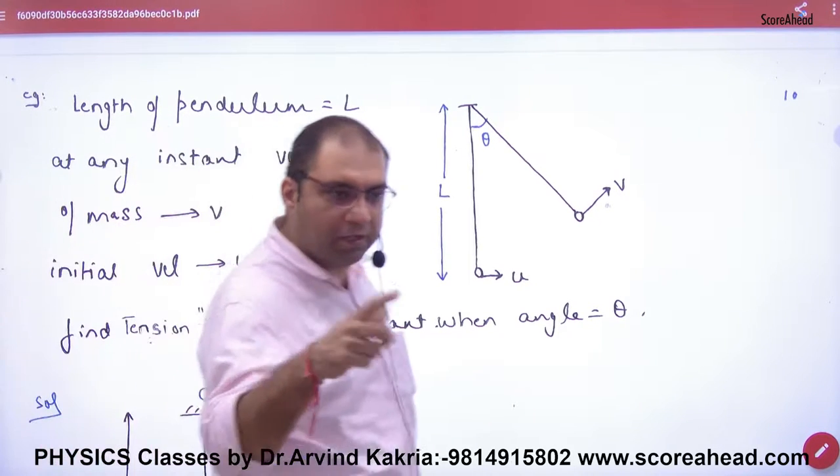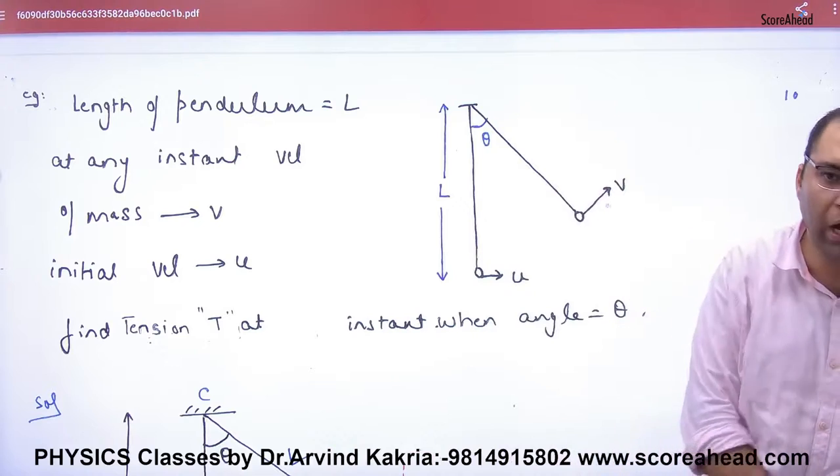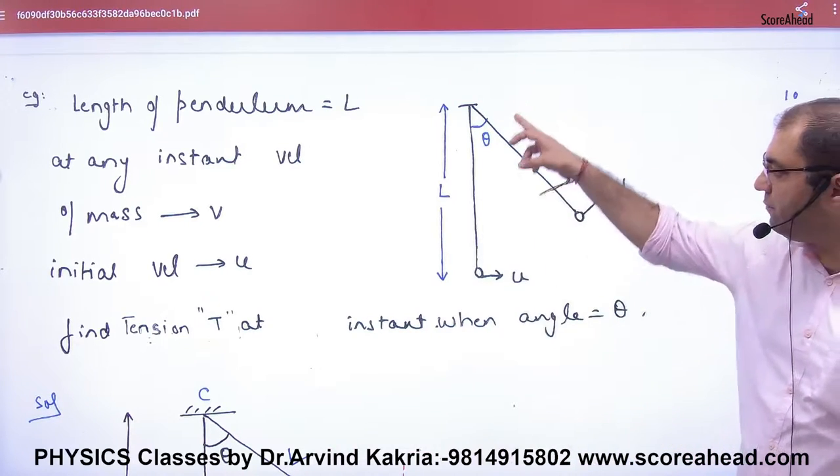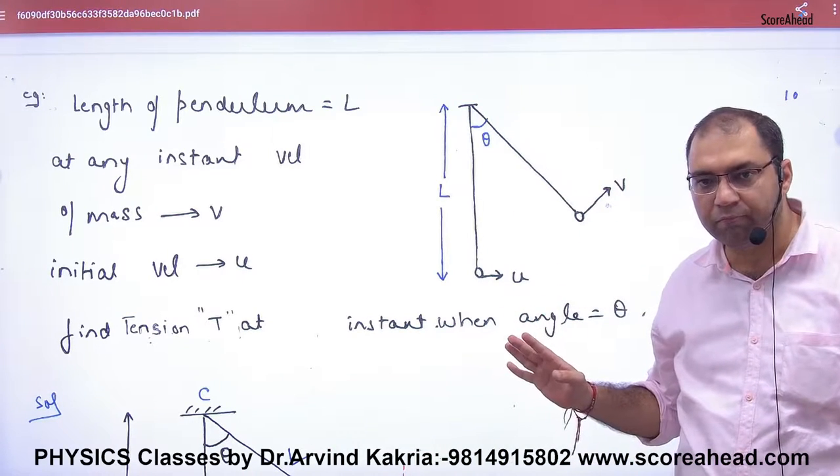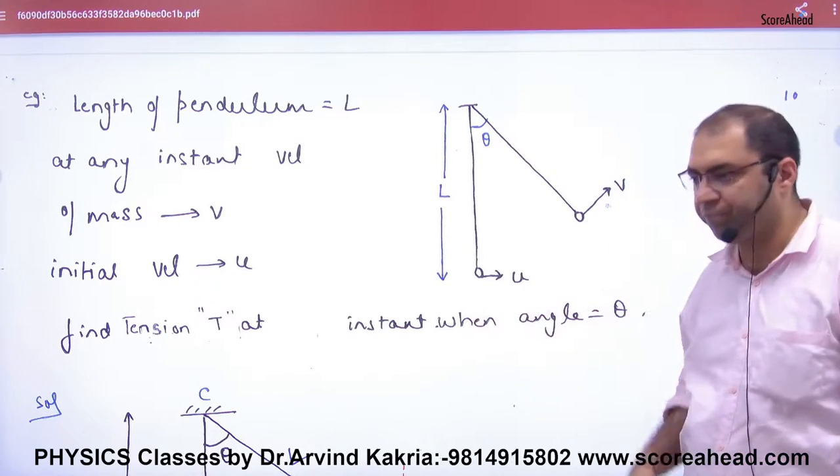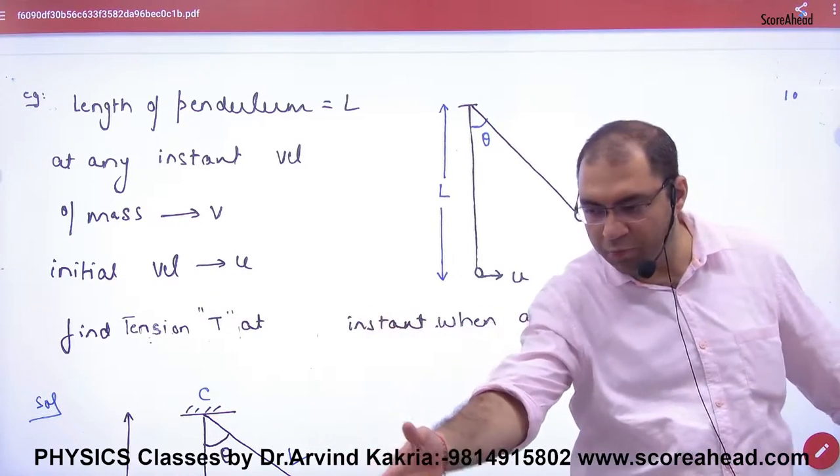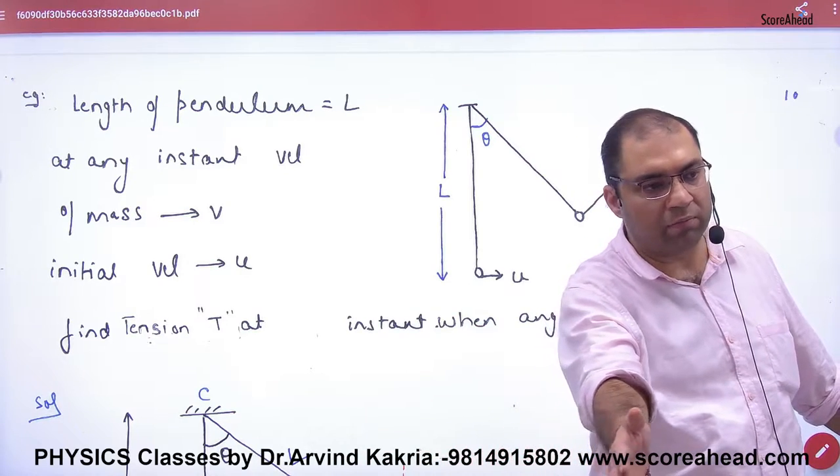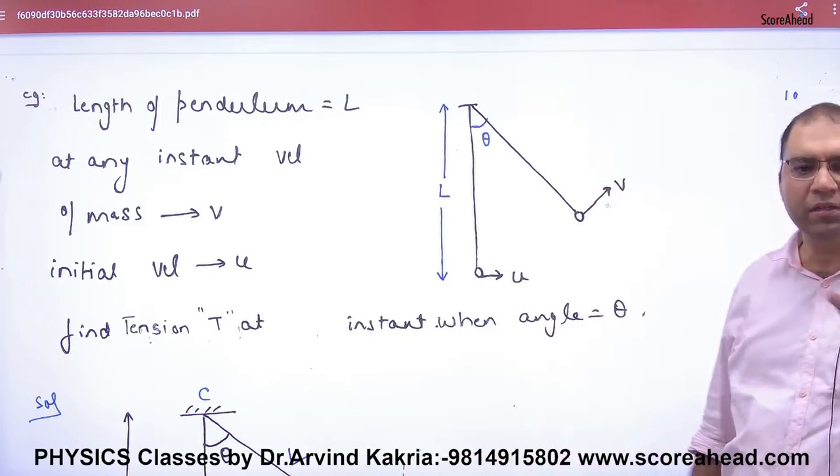In this problem, the length of the pendulum is L. Initially, the pendulum is given velocity u. As the pendulum goes up, the velocity becomes smaller and smaller.